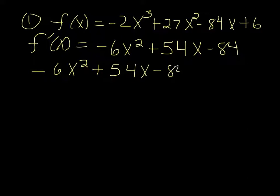And we'll need to find the critical point, so we'll set that equal to 0 and solve. I recommend using the quad program in your calculator to solve it, or you can solve it by hand. So a is -6, b is 54, and c is -84. So we get two critical points, one at 2 and one at 7.